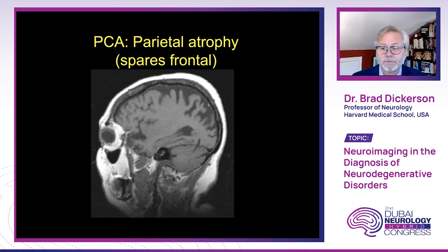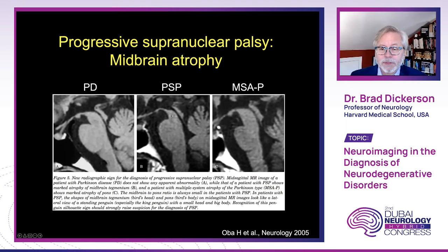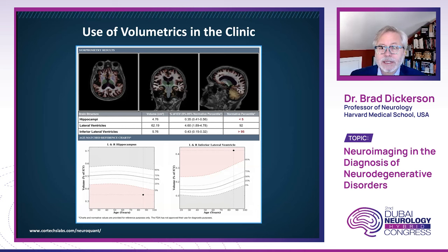Progressive supranuclear palsy has midbrain atrophy with the hummingbird or king penguin sign, which you don't see in Parkinson's disease or multiple systems atrophy. And increasingly we're starting to see the use of volumetrics in the clinic where, for example, a report can show that a patient has a hippocampal volume below the fifth percentile and a ventricular volume above the 95th percentile for that person's age.